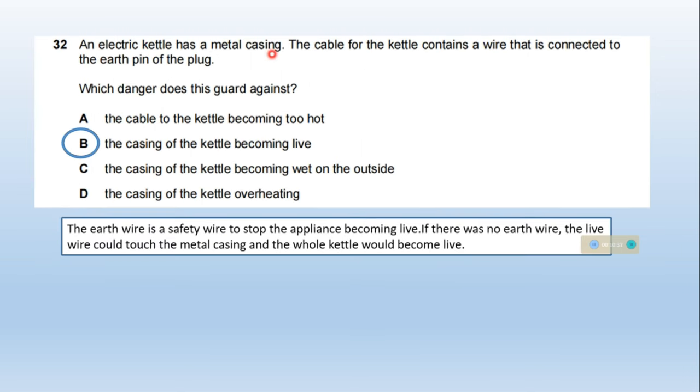An electric kettle has a metal casing. The cable contains a wire connected to the earth pin of the plug. Which danger does this guard against? The earth wire is a safety wire to stop the appliance becoming live. If there was no earth wire, the live wire could touch the metal casing and the whole kettle would become live. Option B is correct.